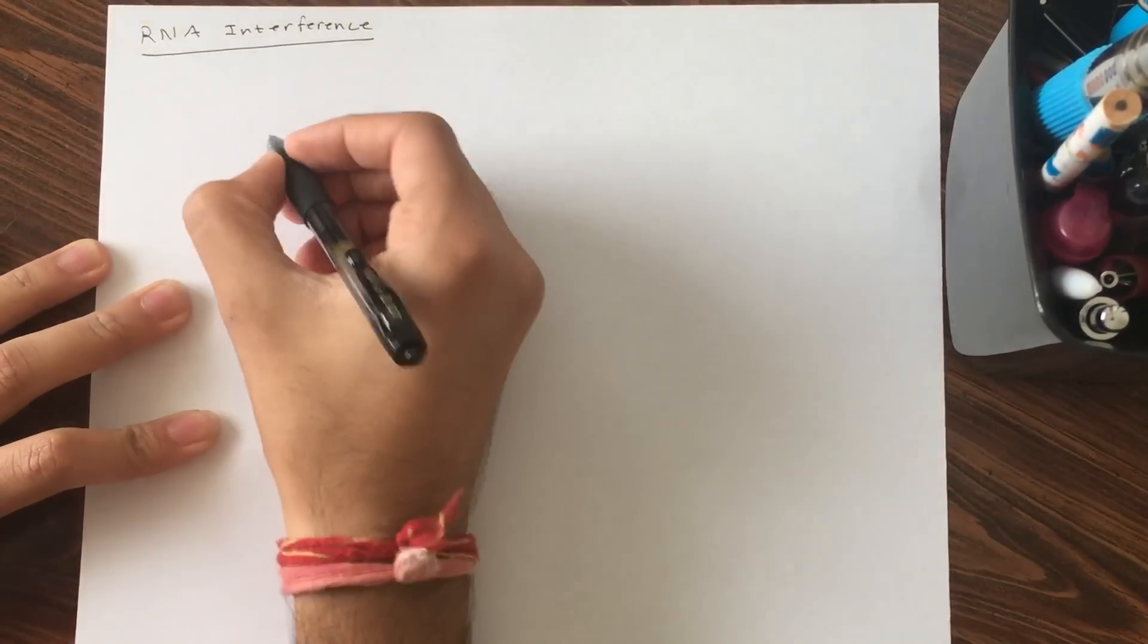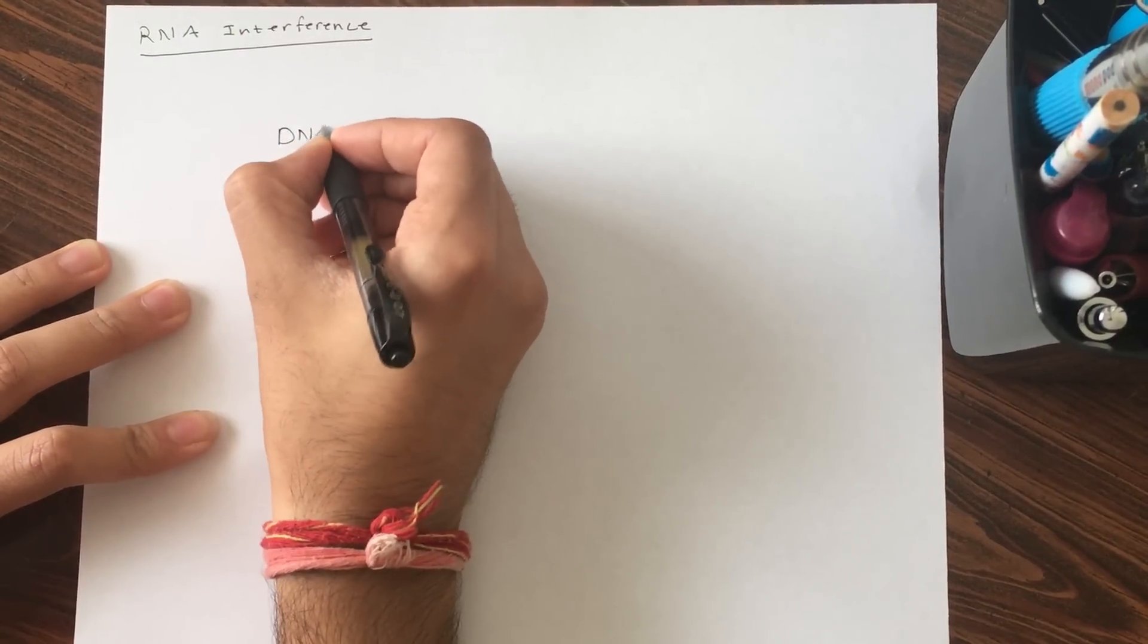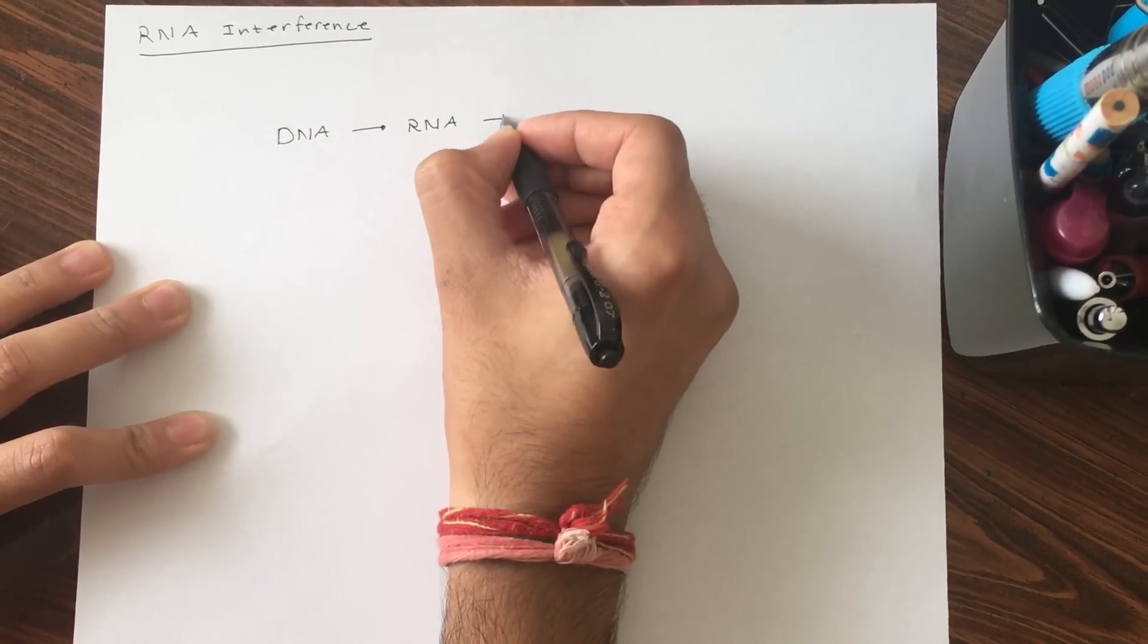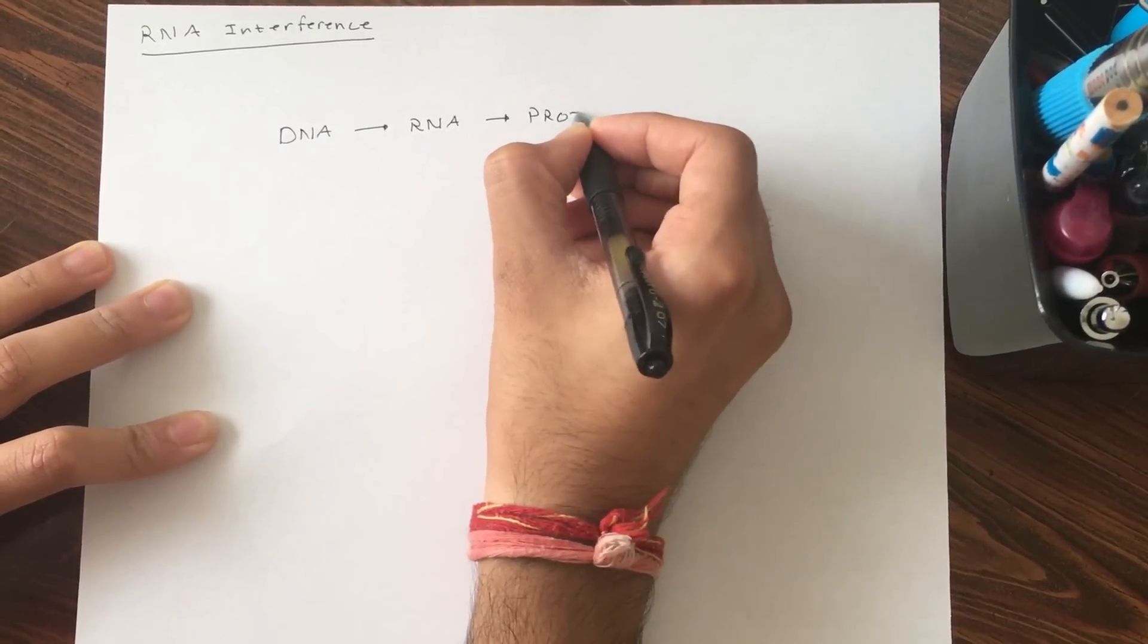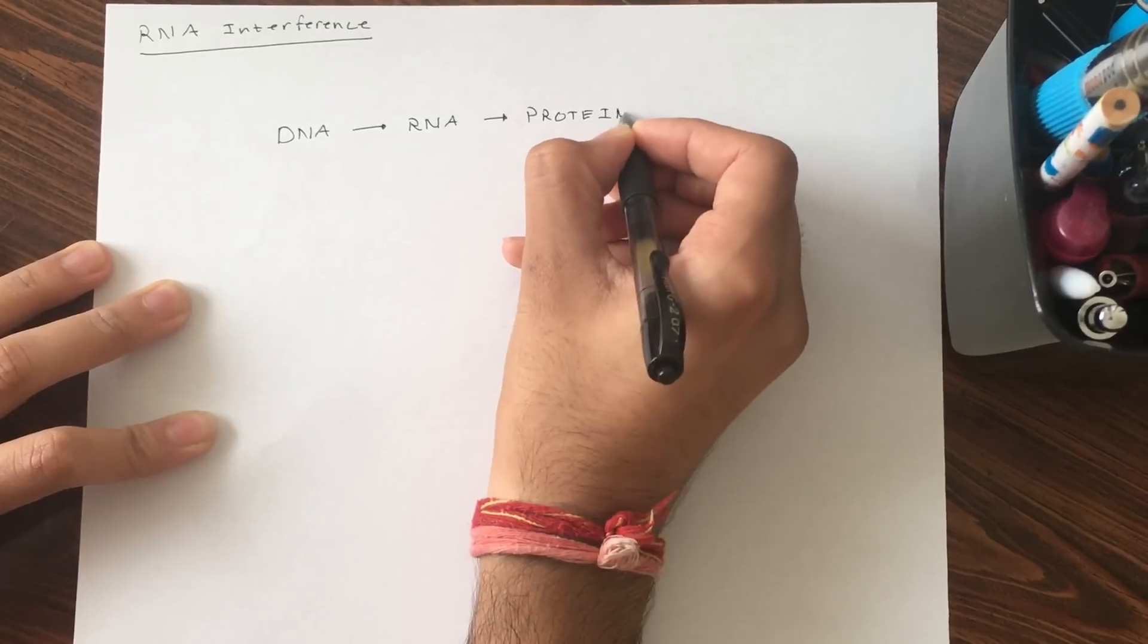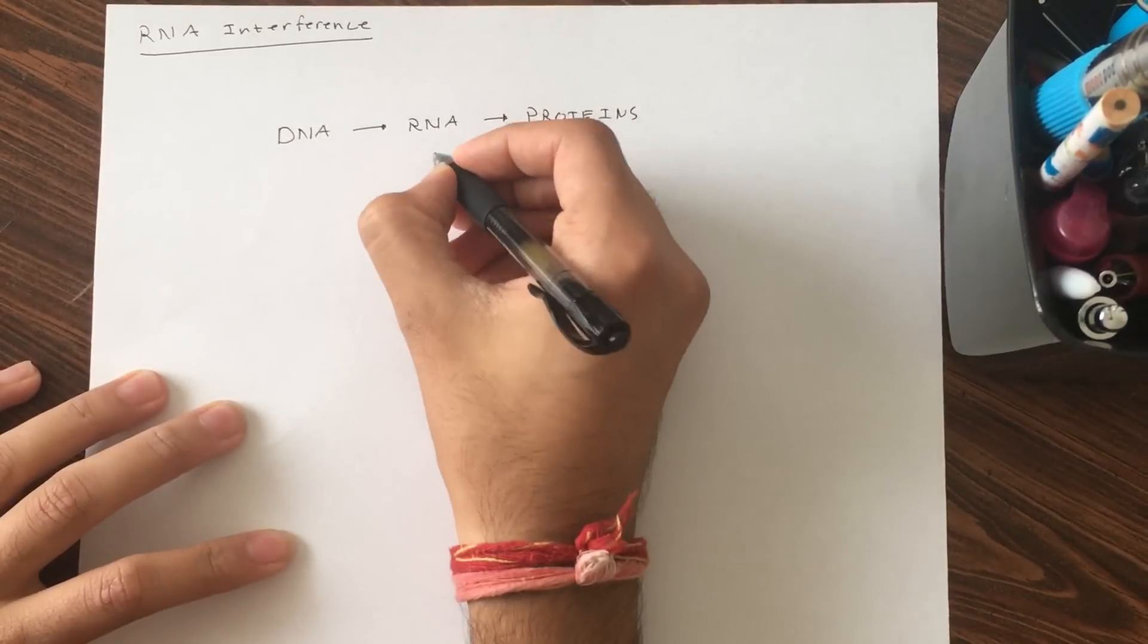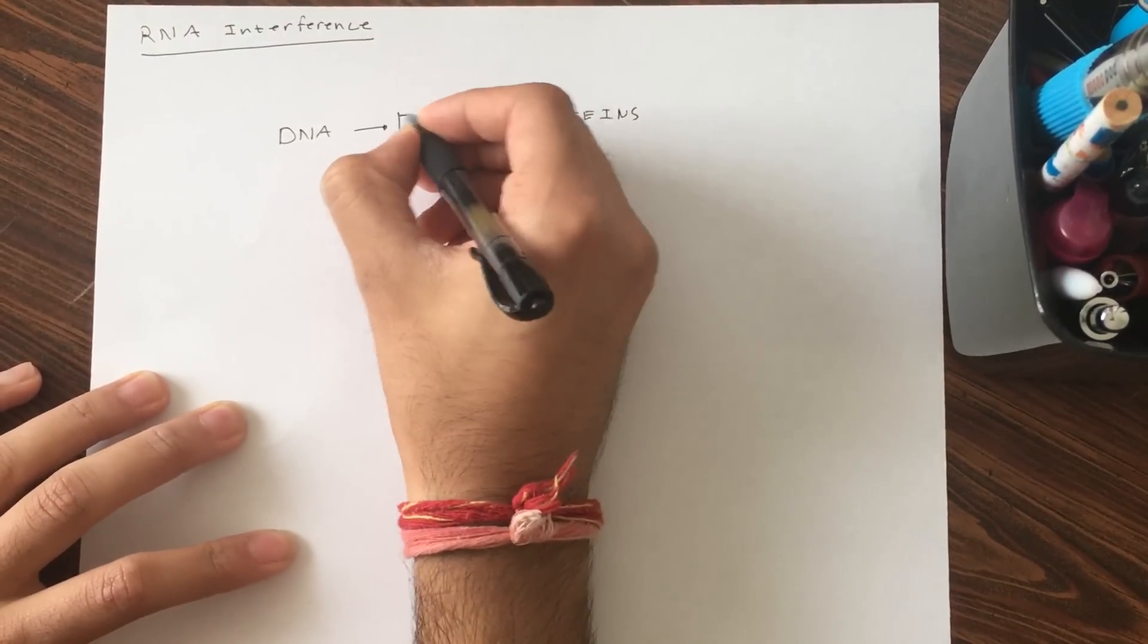To start with, as you know, the central dogma is that you have DNA which goes to RNA, which makes all the proteins that you see. RNA interference interferes with this step of the central dogma, the RNA part.